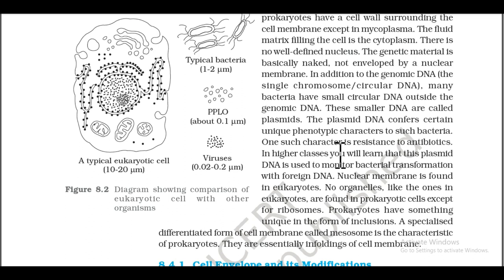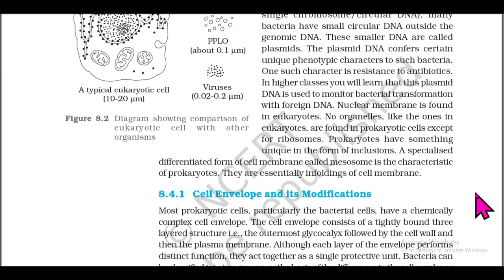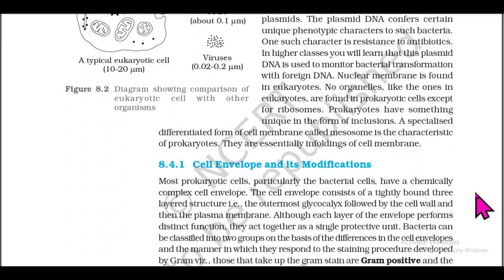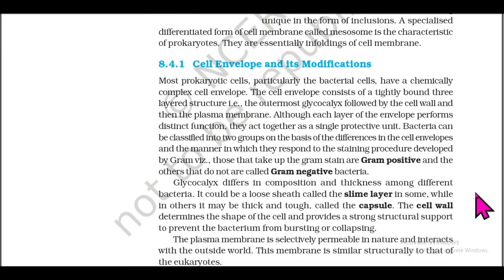In higher classes, you will learn that plasmid DNA is used to monitor bacterial transformation with foreign DNA. Nuclear membrane is found only in eukaryotes. No organelles like those in eukaryotes are found in prokaryotic cells except for ribosomes. Prokaryotes have a unique specialized differentiation from the cell membrane called mesosome, which is characteristic of prokaryotes — essentially infoldings of the cell membrane.